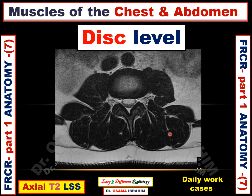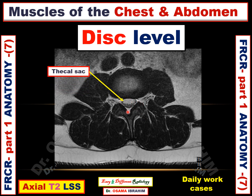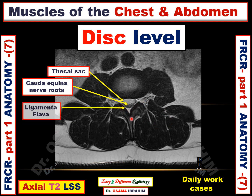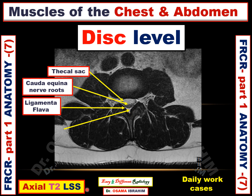Let us talk about the posterior muscles in the paraspinous region. This arrow refers to the thecal sac, which contains multiple nerve roots — these dark dots — called the cauda equina nerve roots. This arrow refers to the ligamentum flavum appearing in the posterior aspect of the lamina. This arrow refers to the white signal in this axial T2-weighted image of the lumbosacral spine, posterior to the thecal sac, referring to epidural fat.